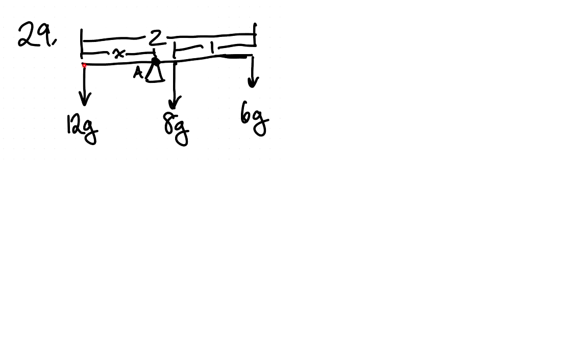Here we're told a two meter long uniform beam of mass eight kilograms supports a 12 kilogram bag of vegetables at one end and a six kilogram bag of fruit at the other end. At what distance from the vegetables should the beam rest on the shoulder to balance and what assumptions do we make?